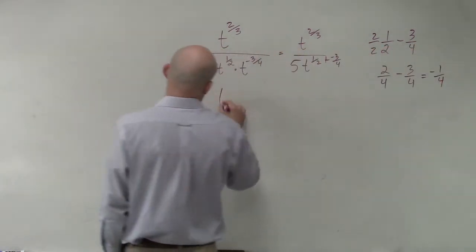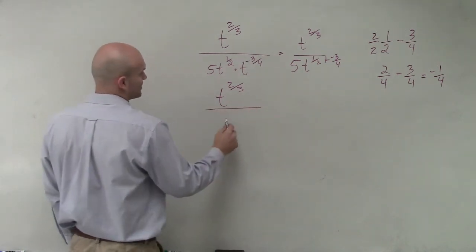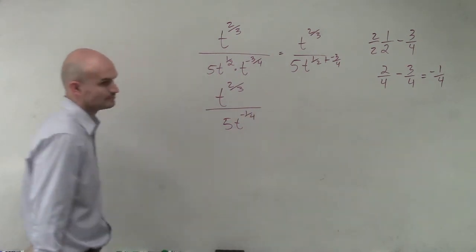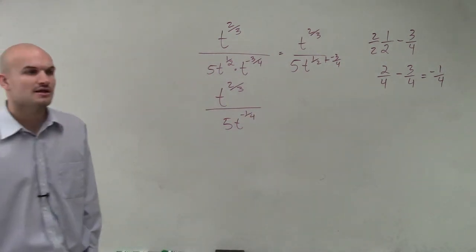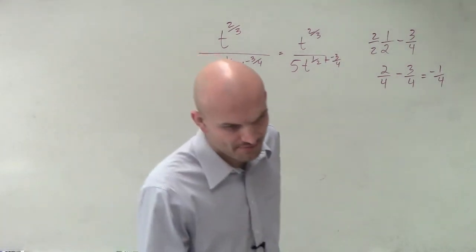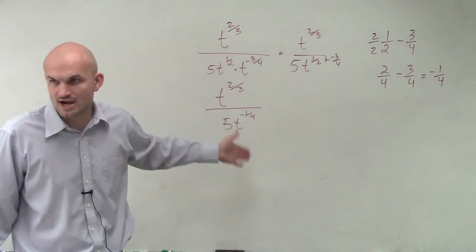So now my problem really is t to the 2 thirds divided by 5t to the negative 1 fourth. Now there's a couple different ways you could do this. All they're asking us to do is simplify. Well, you can just subtract these, right?